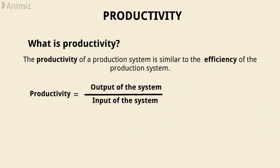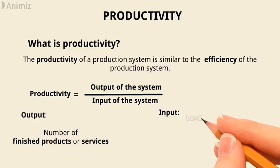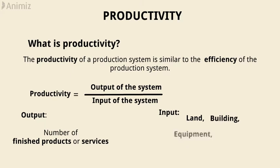Here, output means the number of finished products or services, and inputs are land, building, equipment, raw material, machinery, labor, etc.